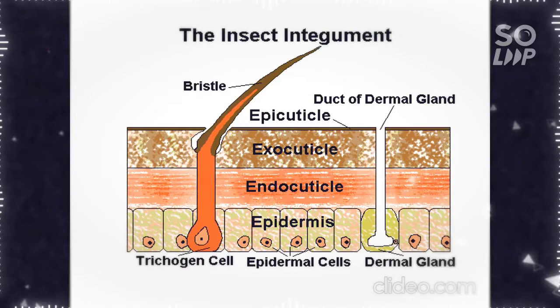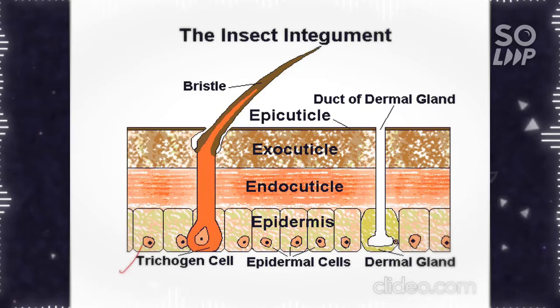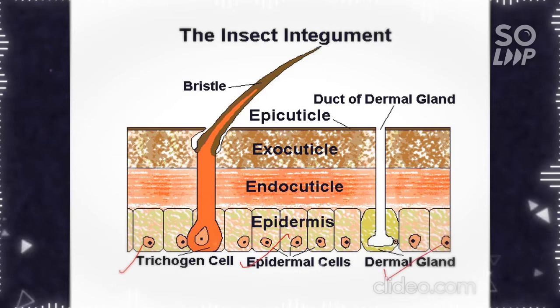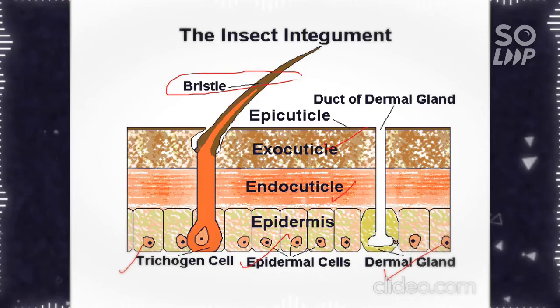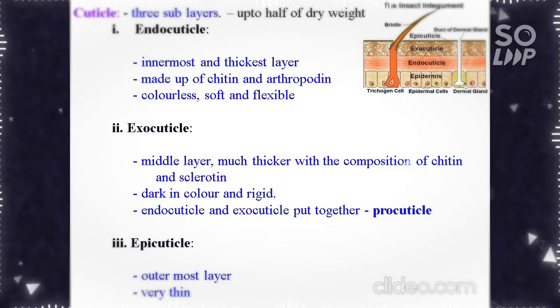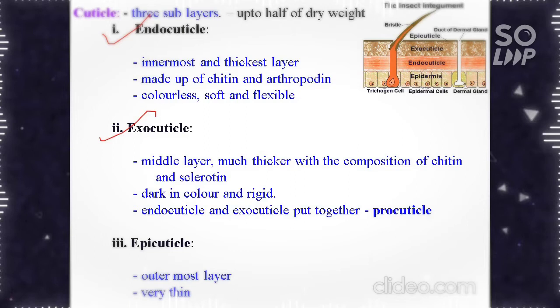This is another picture of the insect integument showing the trichogen cell, the epidermal cells, the dermal glands which are able to secrete wax, then endocuticle, exocuticle and this bristle is called seta. The cuticle has three sub layers: first is the endocuticle, second is exocuticle, third is the epicuticle.